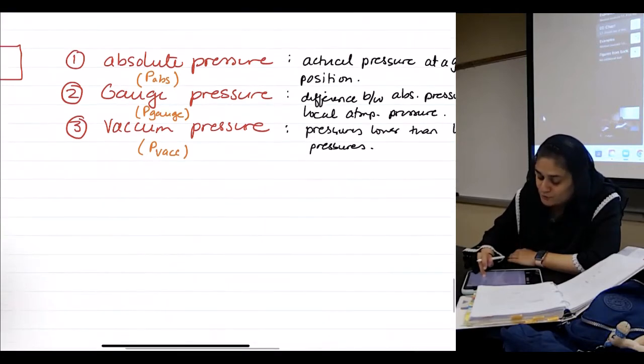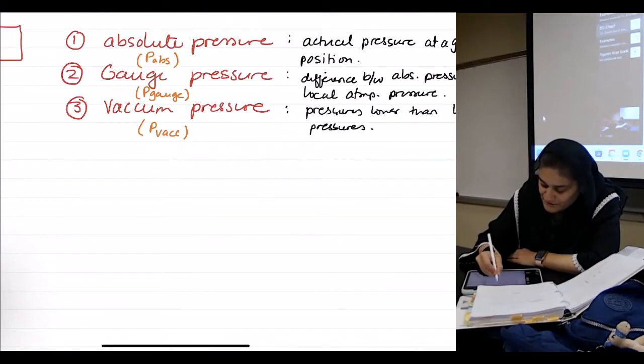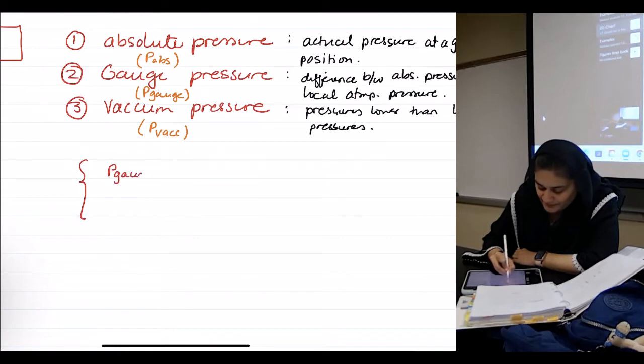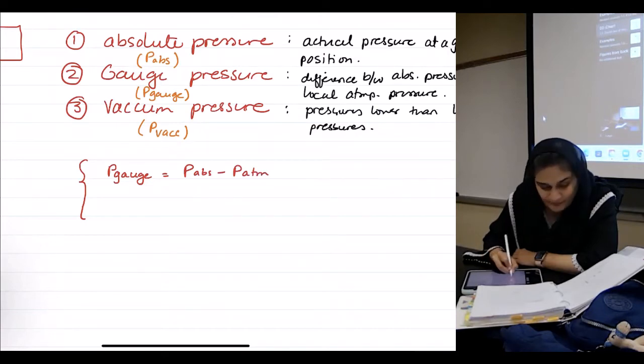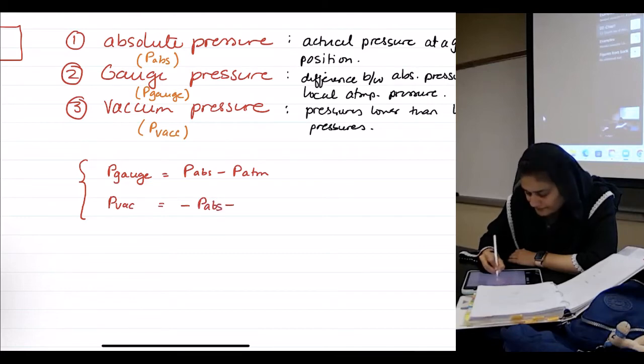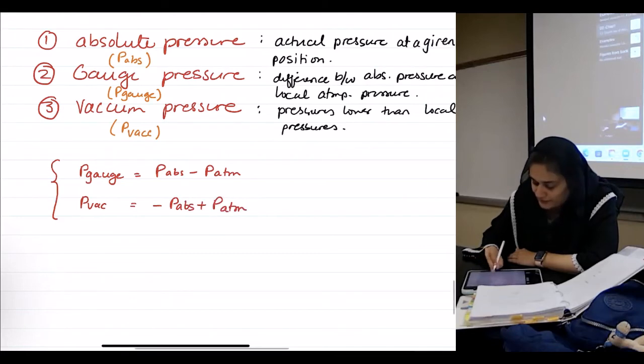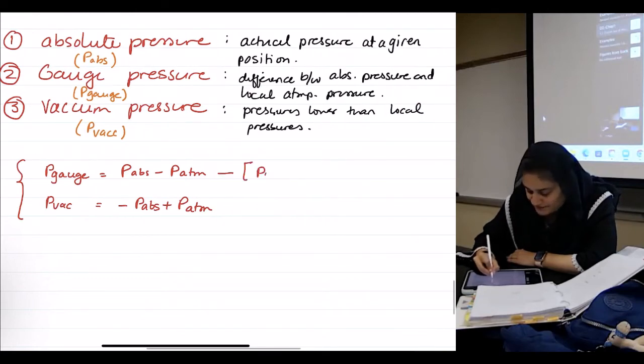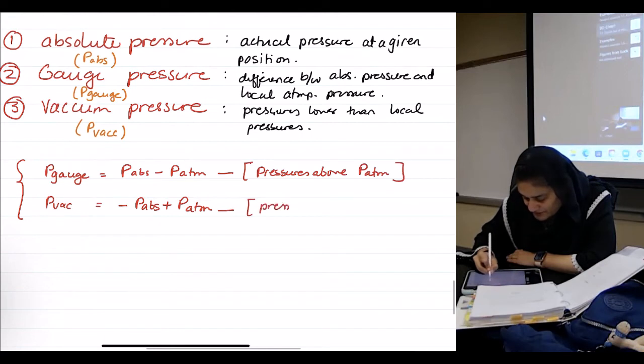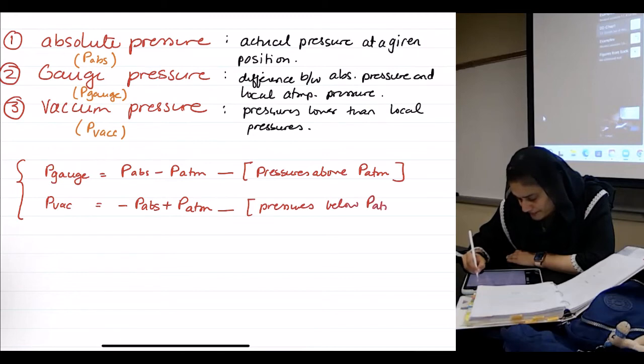So, there are two formulas that relate each of them with each other. Those are gauge, ATM, and vacuum. This is used for pressures above ATM, and this is used for pressures below atmospheric pressures.